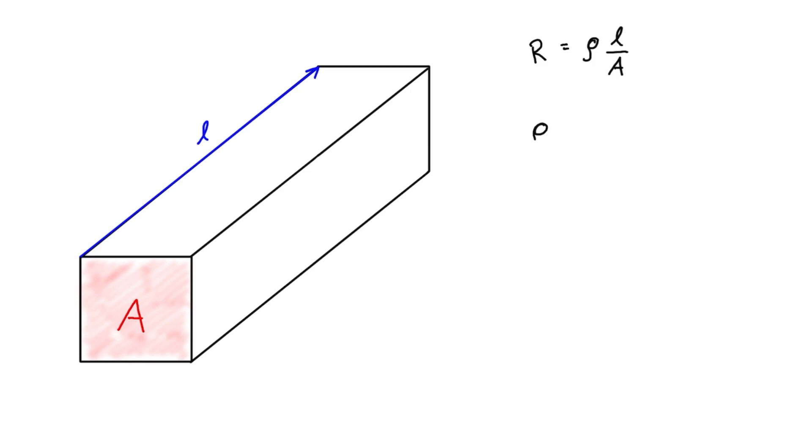And we can just rearrange that as well to get the expression for resistivity, which is equal to resistance times the inverse of that fraction, so area over length.